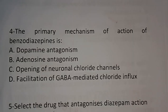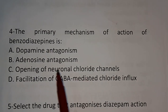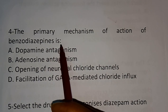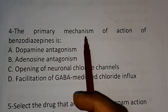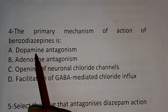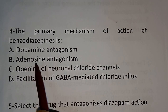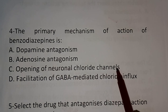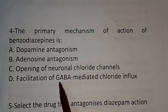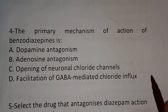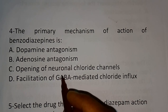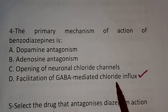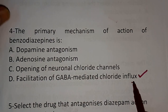Question number 4: the primary mechanism of action of benzodiazepine is. Options: A) dopamine antagonism, B) adenosine antagonism, C) opening of neuronal chloride channels, D) facilitation of GABA-mediated chloride influx. This we already studied in the second question. The correct answer is option D: benzodiazepines cause facilitation of GABA-mediated chloride influx.